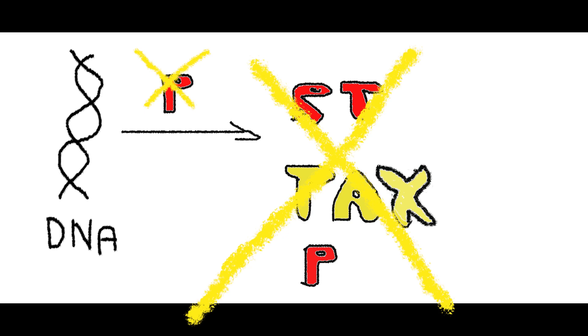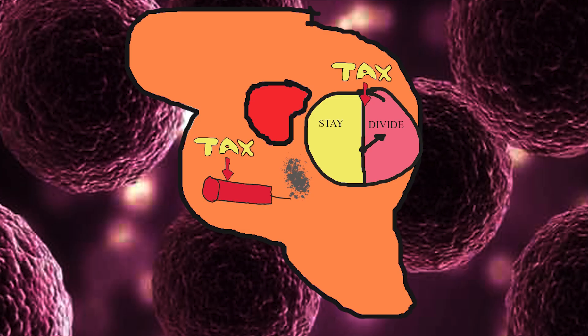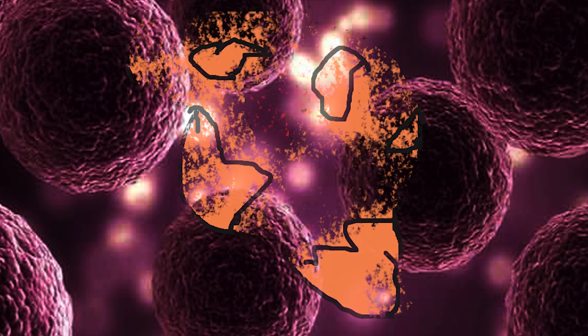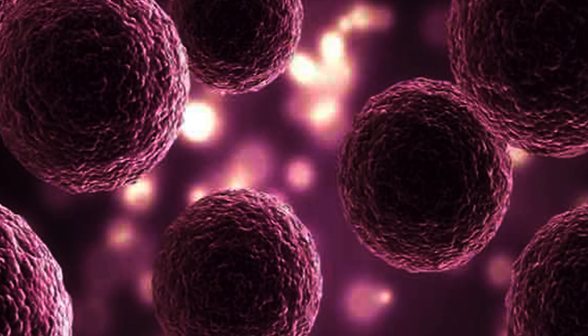Every protein inside the cell has a limited lifetime. If you block the protease and RT, Tax can't be produced anymore. If no more Tax is being produced, then slowly, Tax will decrease. The self-destruct mechanism will activate. Thus, we are decreasing the number of tumor cells by using antiretroviral medicine.